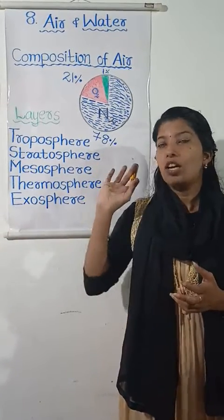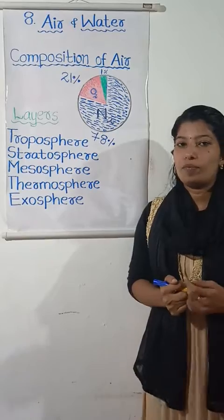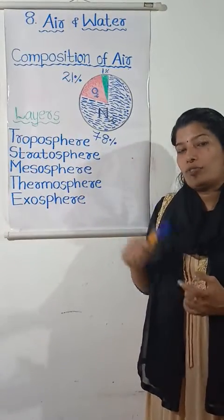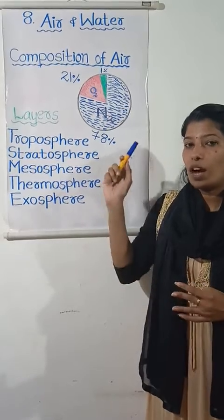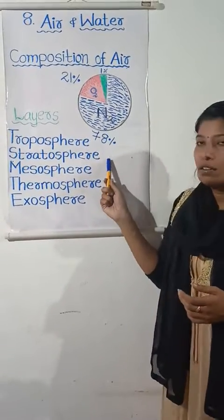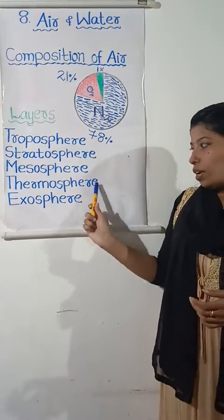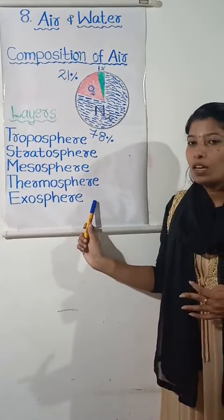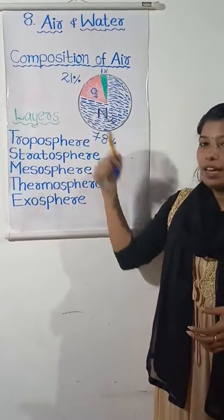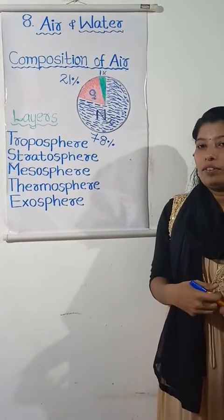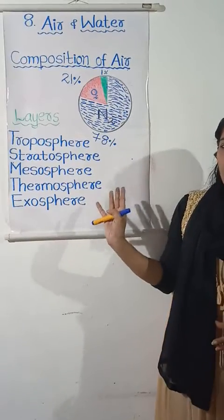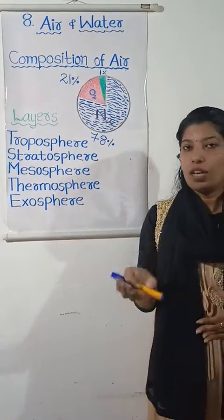This first layer is called the troposphere. There are five layers of atmosphere. They are: troposphere, stratosphere, mesosphere, thermosphere, and exosphere. The troposphere is the first layer where we live, and this layer is made up of the gases that we breathe.